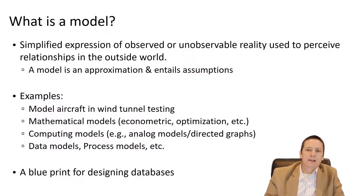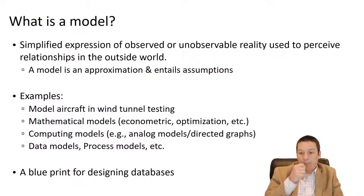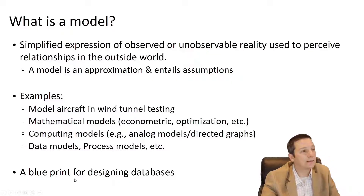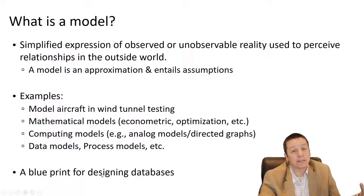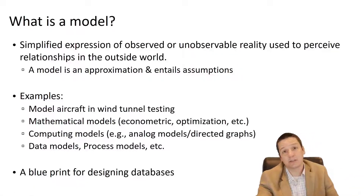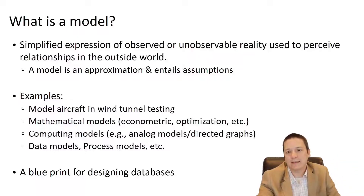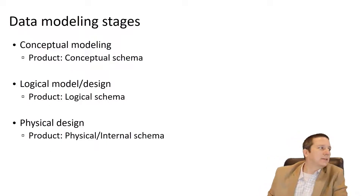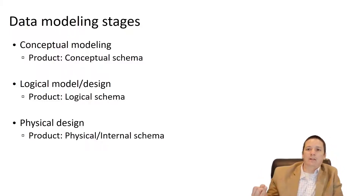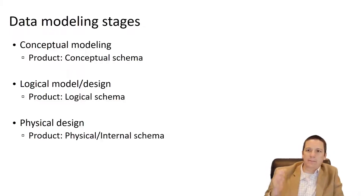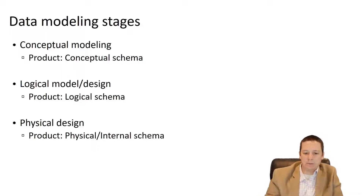All of this data modeling becomes our blueprint for designing databases. Understanding what attributes we care about for our students, classes, professors, staff, and buildings is how we're going to design our database. These models work at three different levels: the conceptual model, the logical model, and the physical model. These are a stepwise progression of getting more and more technical specificity.